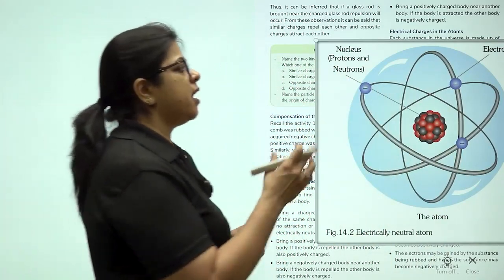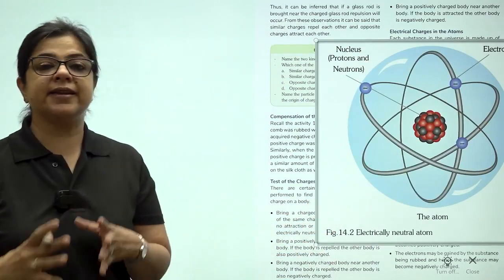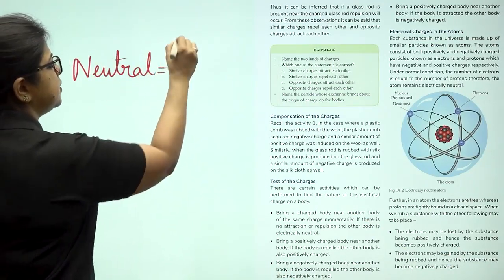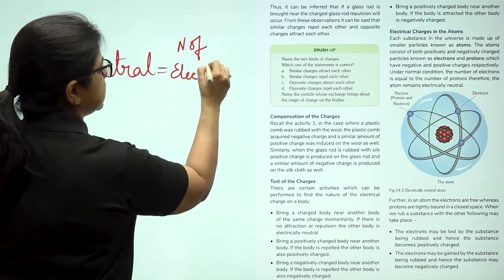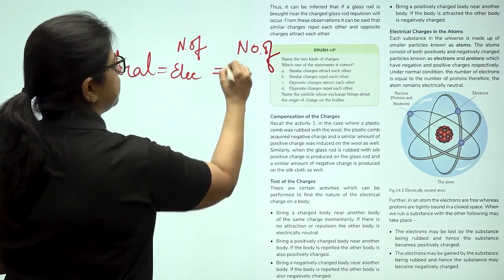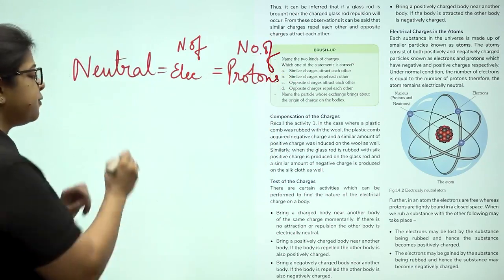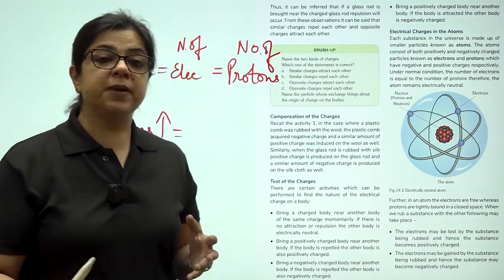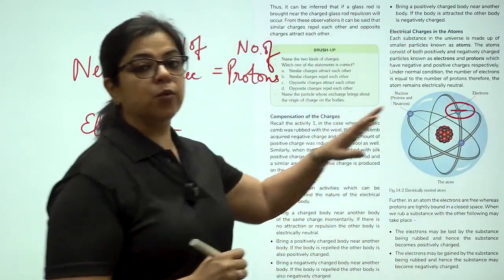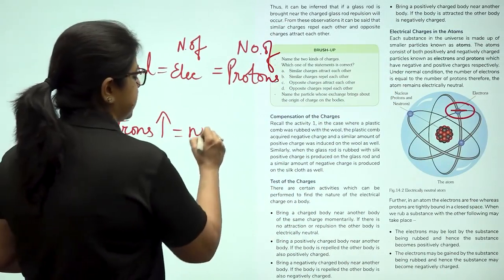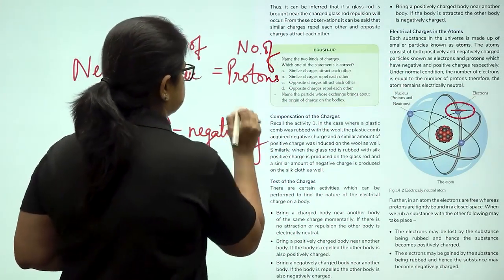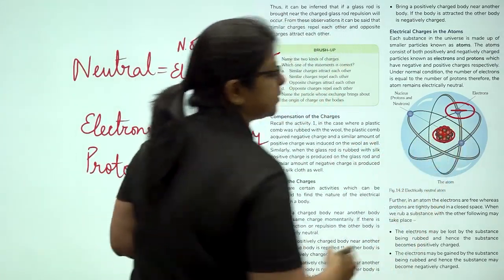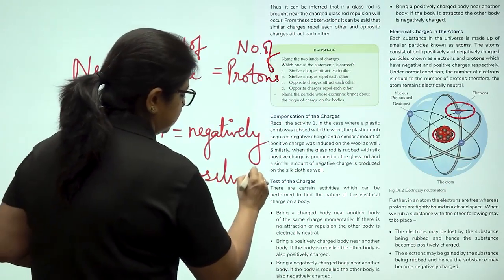In these orbits there are electrons. Electrons are negatively charged particles. Children, in a neutral atom the number of electrons is equal to the number of protons. If the number of electrons becomes more, the negative charge will become more and the atom will become negatively charged. If the number of protons is more, the atom is going to be positively charged.